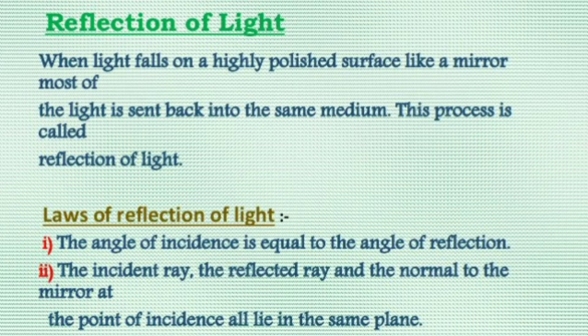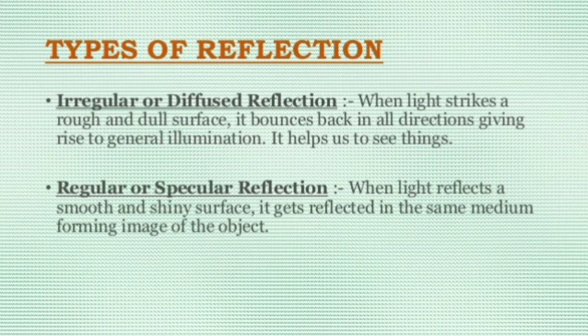The law of reflection of light: there are two laws. Number one, the angle of incidence is equal to the angle of reflection. Second law, the incident ray, reflected ray, and the normal to the mirror at the point of incidence all lie in the same plane.